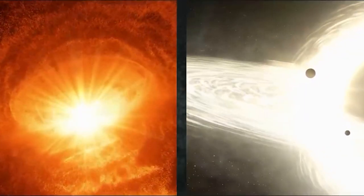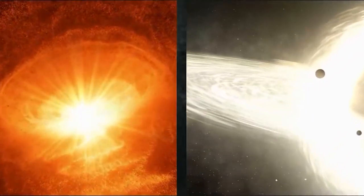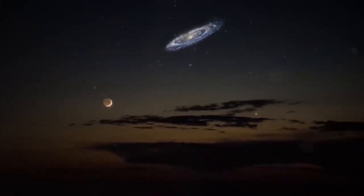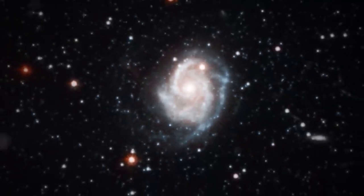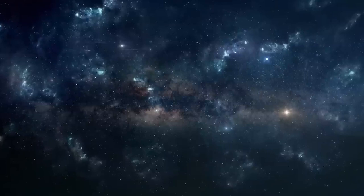Andromeda, like the Milky Way, is a barred spiral galaxy with large encircling arms that are rich in gas, dust, and brilliant stars, but with a diameter of more than 200,000 light-years, Andromeda is a good deal larger than the Milky Way.